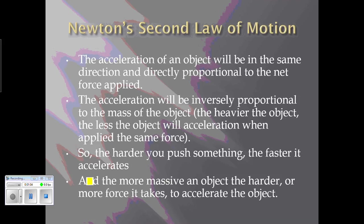The more massive the object is, the harder it's going to be to accelerate — the less it's going to accelerate. If I apply the same force to something lighter as opposed to something more massive, it's going to accelerate less. Some of you even looked into that when we did our acceleration lab. The more massive an object, the more a given force is applied, the less it will accelerate. That's what it means when it says inversely proportional.